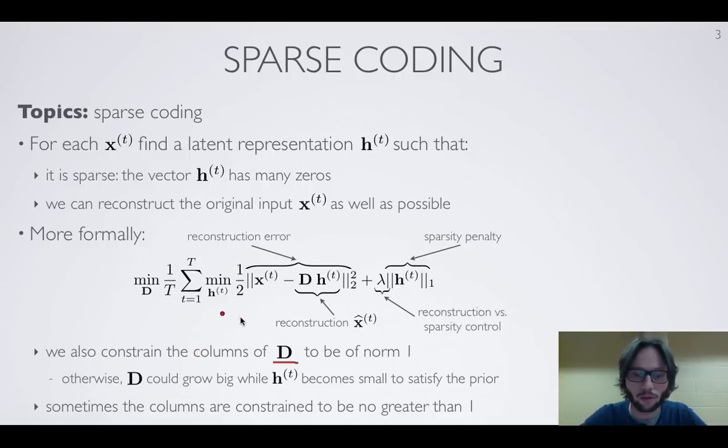That would make the sparsity term here more happy. It would become lower and lower. It could sort of cheat by transferring the size of h into D and then satisfy the sparsity penalty. So to avoid this and get a badly defined objective, what we'll do is that we'll constrain the columns of D to have a norm of 1. So all the vectors that form the columns of D are going to be of norm 1.